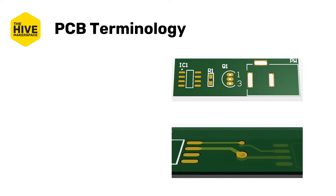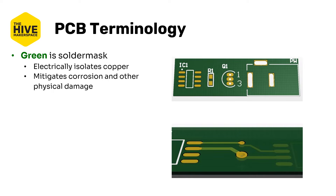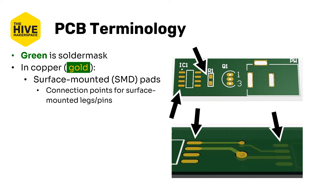So let's go through some PCB terminology. All of this is going to be in relation to the graphics on the right. The green colored material is the solder mask mentioned earlier, which acts as a protective layer to any copper underneath. These days solder mask comes in a wide variety of colors including black, white, red, purple, and yellow, among others. The gold colored materials or polygons are copper.